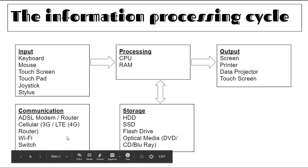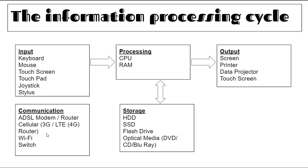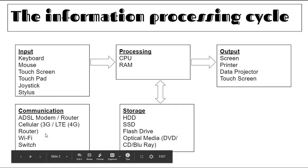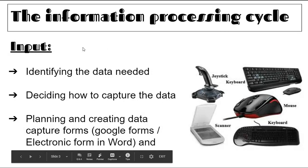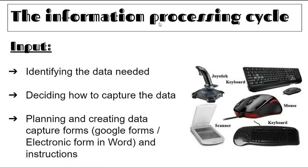Please note that since the textbook was written, fiber internet has become a far more realistic option for most people, so we will mention fiber even though it's not in the slideshow. Information system — information processing cycle: input, identify the data needed, deciding how to capture the data, planning and creating data, capturing forms.